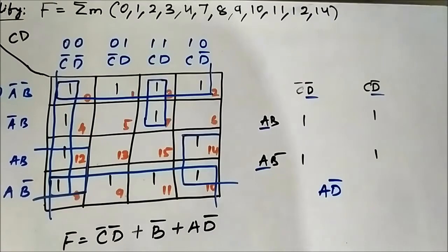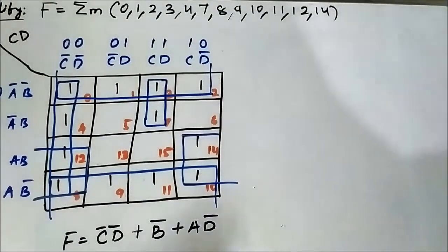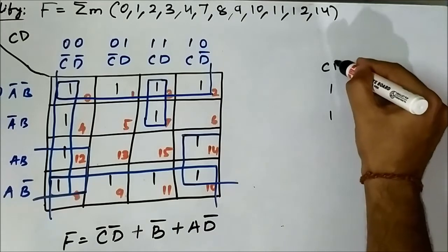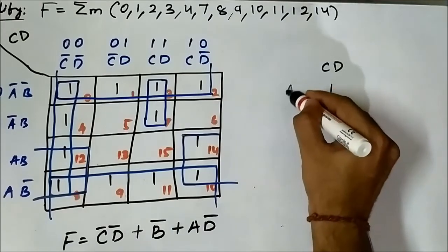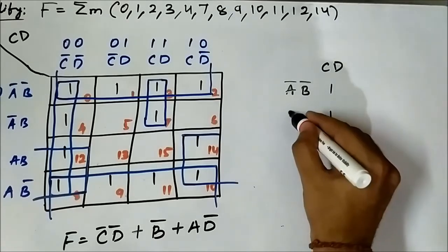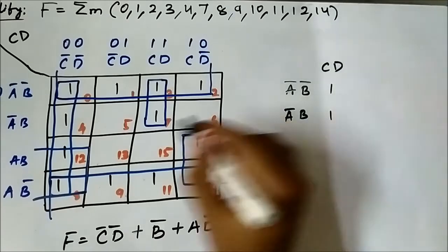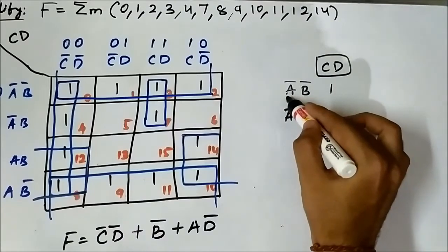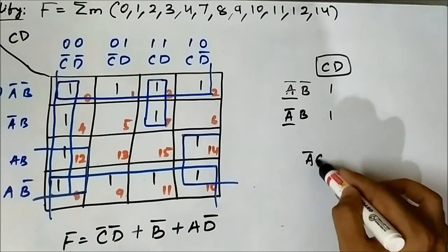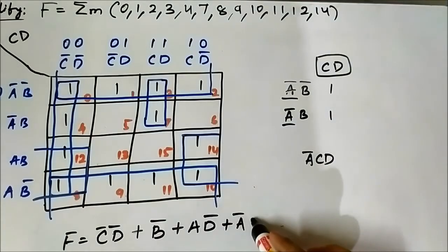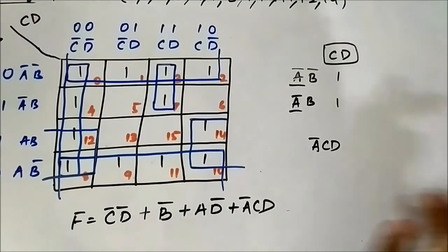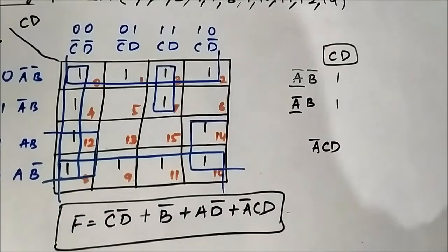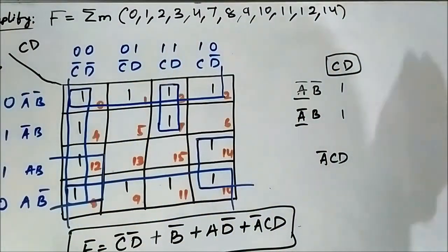The final group is this pair involving cells 3 and 7. The vertical component is CD, and the horizontal components are ĀB̄ and ĀB. In the vertical side we have CD common in both cells. In the horizontal side we have Ā common. So ĀCD is the common set of variables for this pair. This is the simplified boolean expression for the given boolean function in terms of the minterm values.